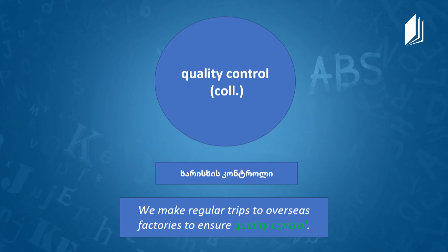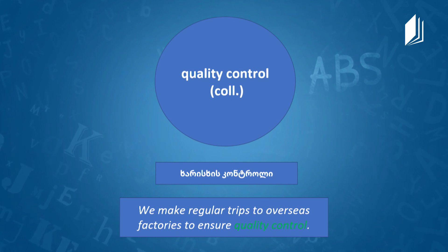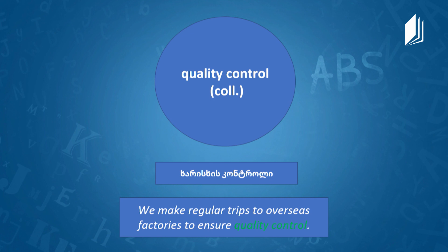The next word is 'quality control' — it's a collocation and a noun. Quality control is the process of looking at goods to make sure they are produced to a certain standard, so that your brand is maintained. Example: 'We make regular trips to overseas factories to ensure quality control.'